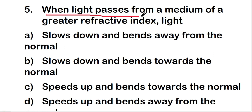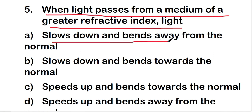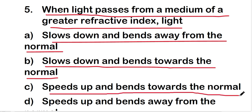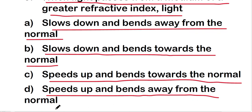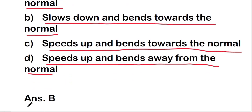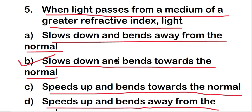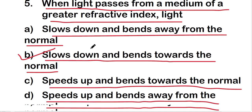When light passes from a medium of a greater refractive index: light slows down and bends away from the normal, light slows down and bends towards the normal, light speeds up and bends toward the normal, or light speeds up and bends away from the normal? The right answer is option B — light slows down and bends towards the normal when passing from a medium of greater refractive index.